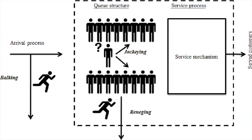Here is the visual representation of arrival behaviors within the queuing system. Bulking occurs when a customer sees the long queue and leaves before joining. Reneging occurs when a customer is already inside the queue but leaves due to impatience. Jockeying occurs when a customer inside the queue switches to a shorter line. In all three cases, from a business perspective, this represents an opportunity loss — a potential client lost due to poor queue management.